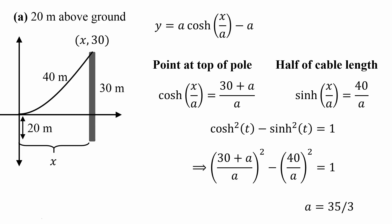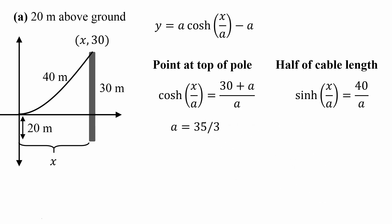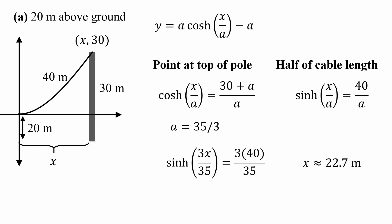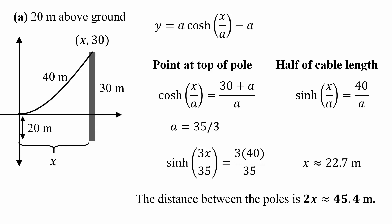We get that a = 35/3. Now that we know this parameter, we use it in our second equation with sinh to solve for x, and we get x ≈ 22.7 meters. Doubling that gives the distance between the two poles as approximately 45.4 meters.